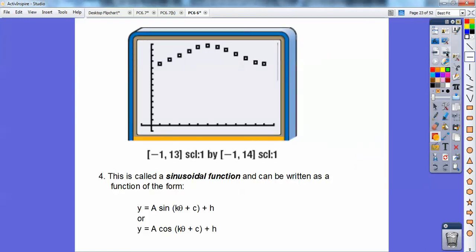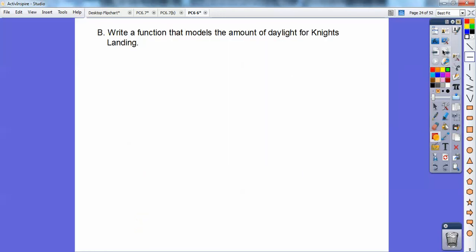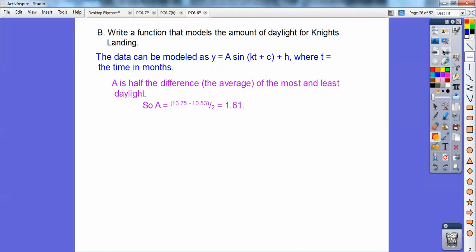This is called a sinusoidal function and can be written as either y equals a sine of k theta plus c plus h, or instead replace the cosine. Typically, if it starts and ends at zero, then we're going to use the sine curve. If it starts and ends at the high spot, we'll use the cosine curve. This one's going to be a sine curve. And actually, sine and cosine are just phase shifts of each other. So actually, you can use either one. It's just going to be different phase shifts. We're going to write a function that models the amount of daylight for Knight's Landing.